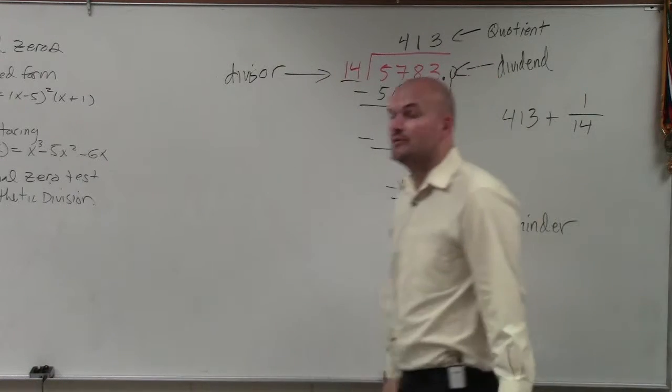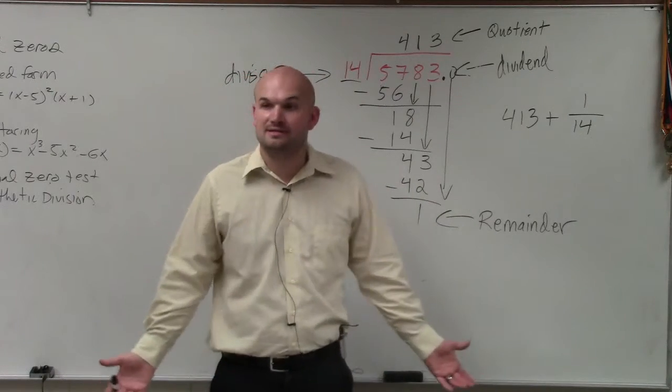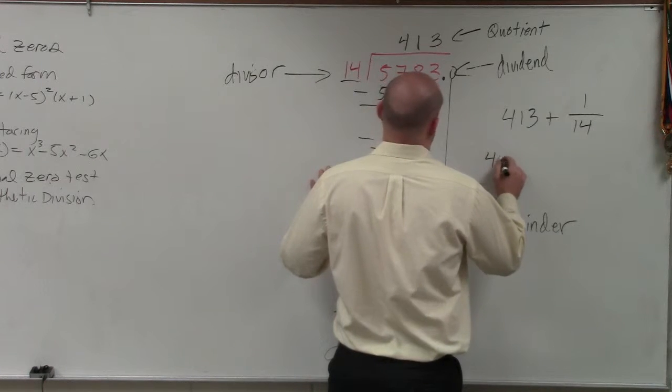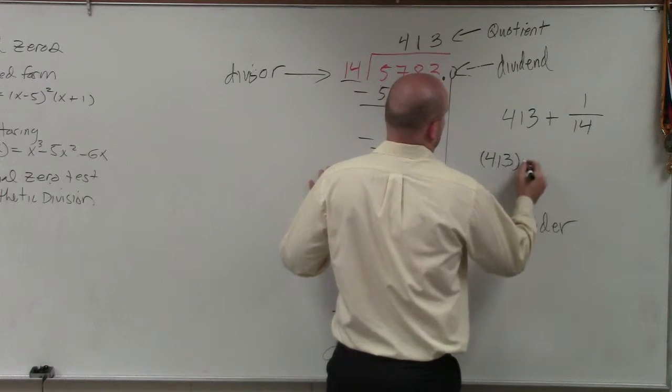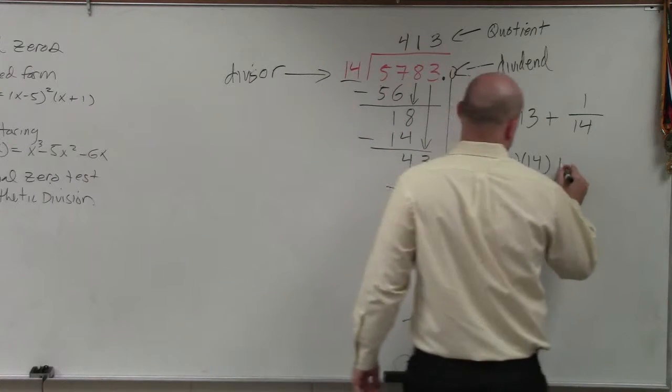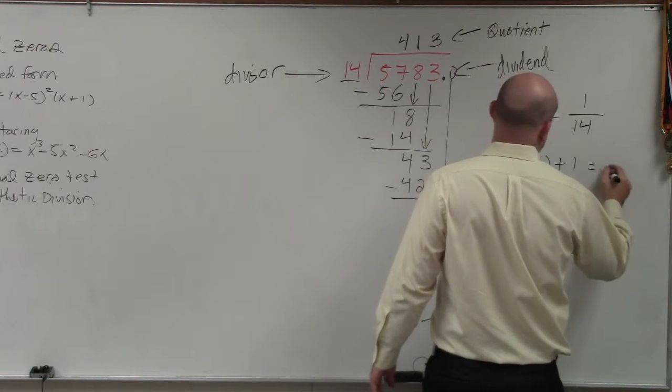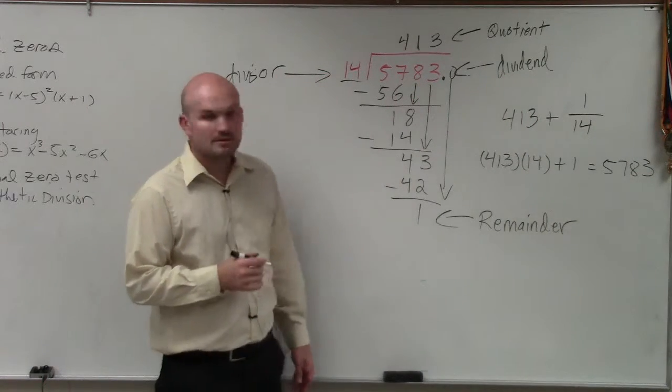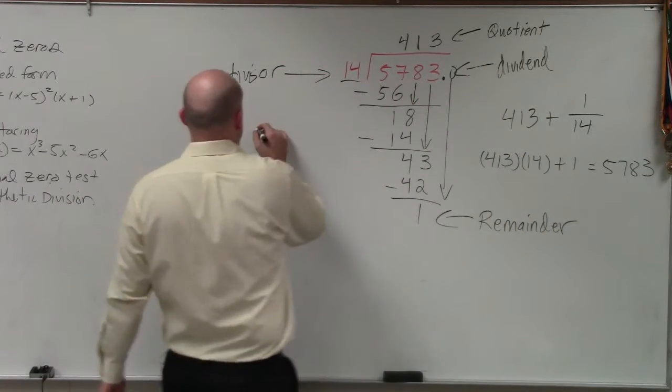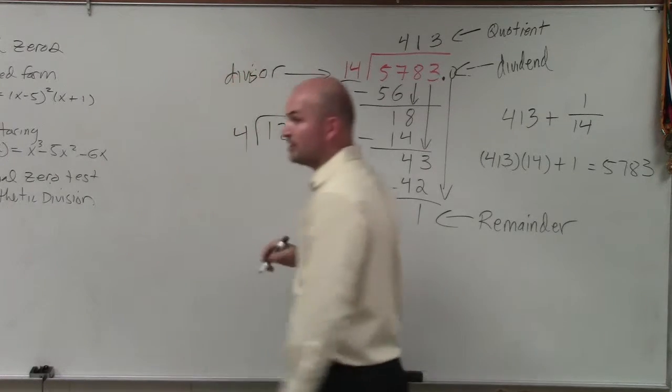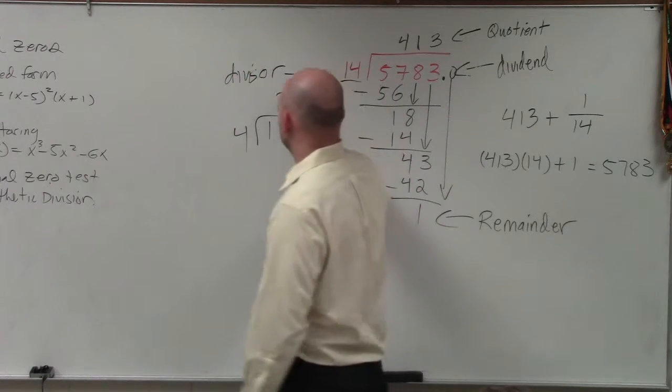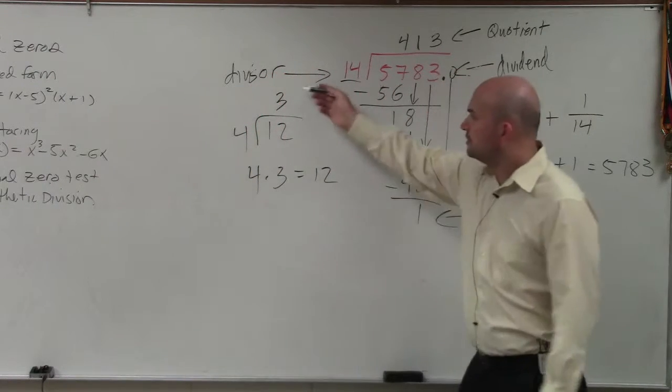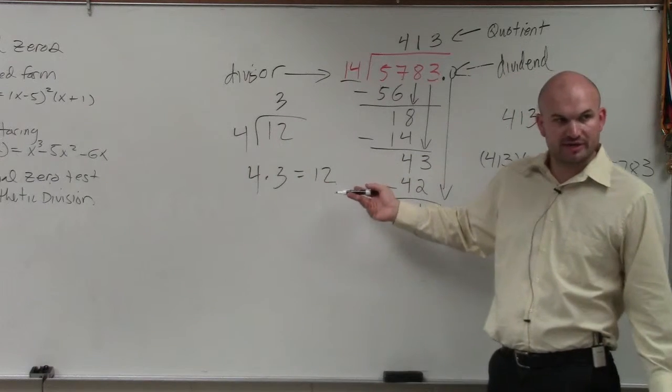I might also ask you to rewrite this as a product. If you write this as a product, you would do 413 times 14 plus 1 equals 5783. Think about it this way - if I did 12 divided by 4, that's 3. You could rewrite that as 4 times 3 equals 12. Quotient times divisor equals your dividend.